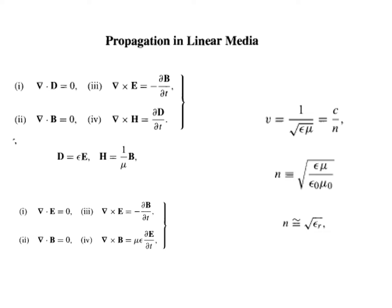We know Maxwell's equations in free space. In free space, there is no charge, no current. So rho equal to 0 and J equal to 0. For free space, we can write Maxwell's equations as: del dot D equal to 0, del dot B equal to 0, del cross E equal to minus dou B by dou t, and del cross H equal to dou D by dou t.